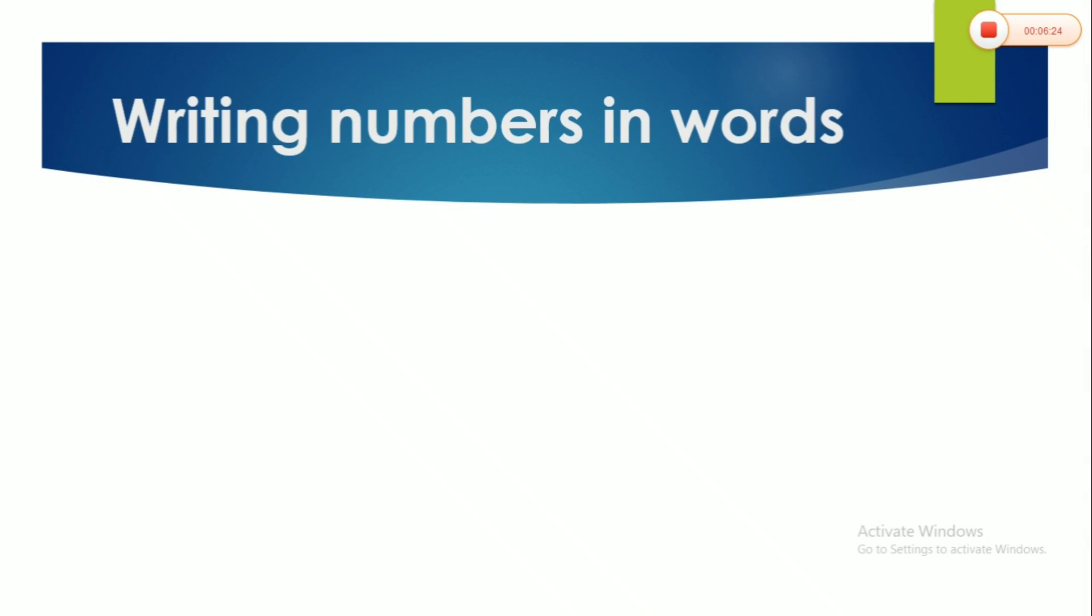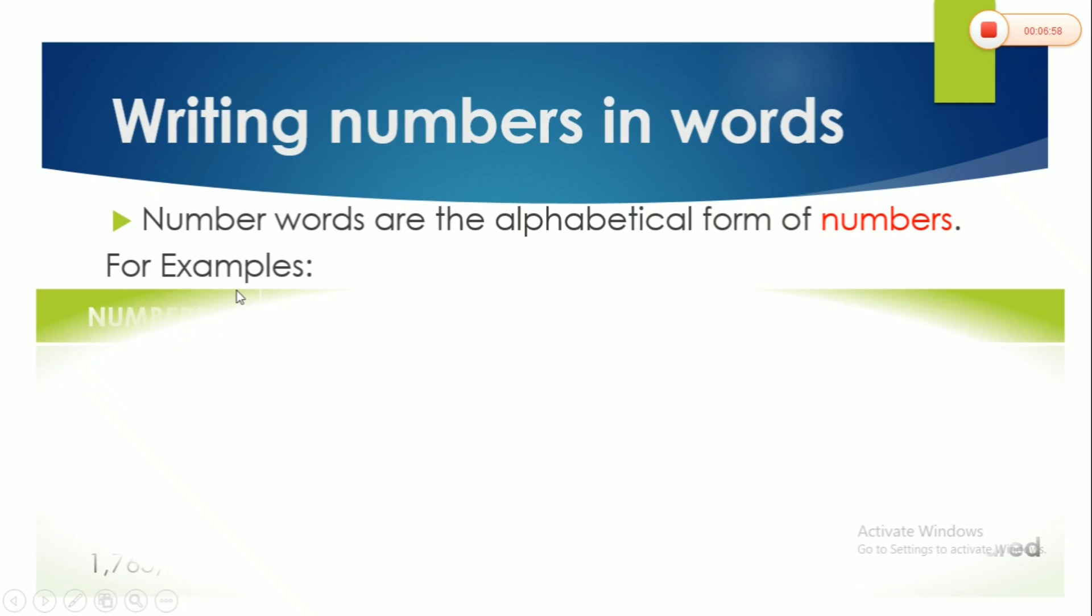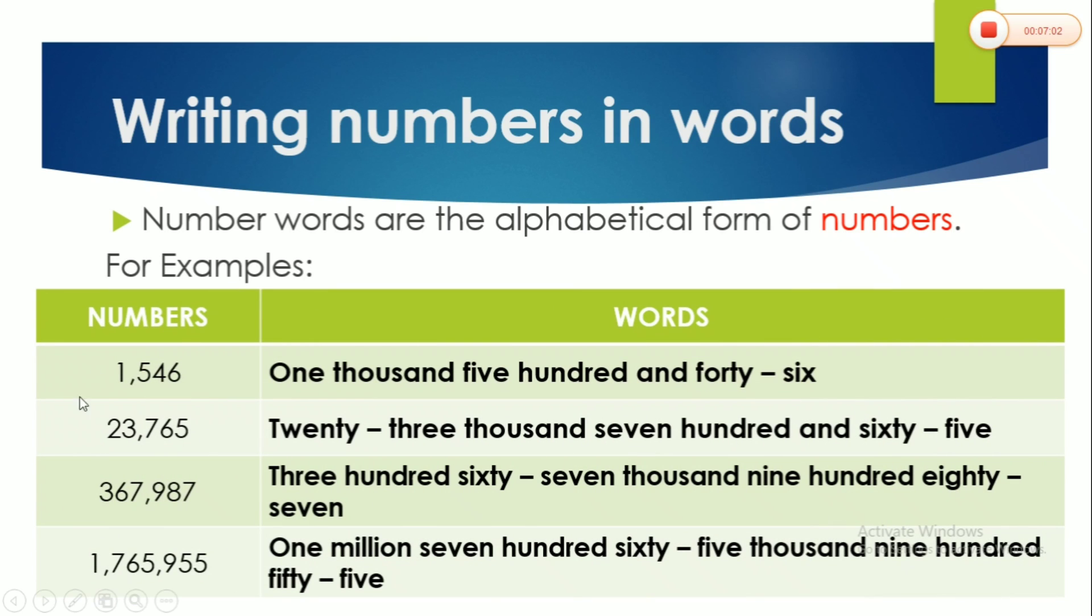Okay, I'm going to teach you how to write numbers, or numerals rather, in words. So number words are the alphabetical form of numbers. Okay, for example, we have these numbers or numerals. Now let's try this. 1,546. This is a number. And in words, we usually write it as one thousand five hundred forty-six. In some books, they don't put 'and'. They don't really put 'and' because they usually put 'and' in decimal form. But in some books, they usually put 'and'. So they're both correct.